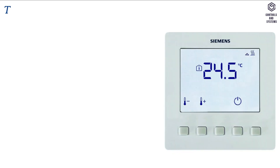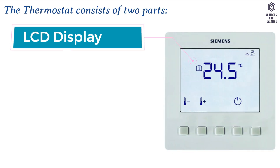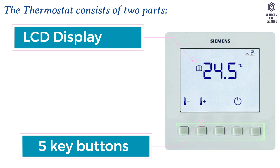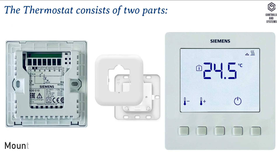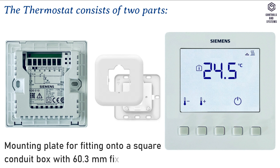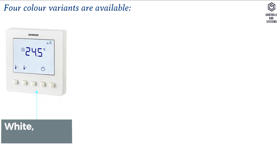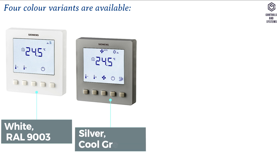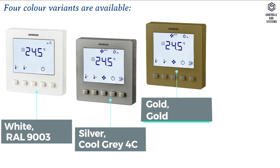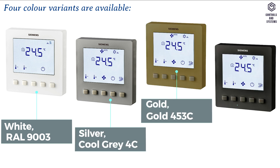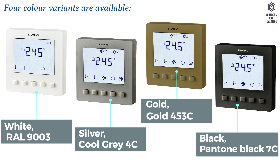Material data: the thermostat consists of two parts — one is an LCD display with five key buttons on the user interface, and the other is a mounting plate for fitting onto a square conduit box with 60.3 mm fixed centers. Four color variants are available: White (RAL 9003), Silver (Cool Gray 4C), Gold (Gold 453C), and Black (Pantone Black 7C).